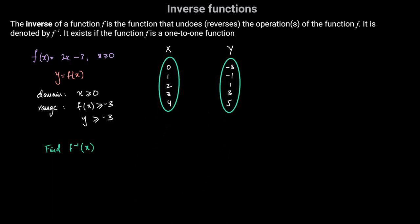For x greater than or equal to 0: when x is 0, y is negative 3; when x is 1, y is negative 1; when x is 2, y is 1; when x is 3, y is 3; and when x is 4, y is 5. So here are some of the possible input-output value pairs for this function.